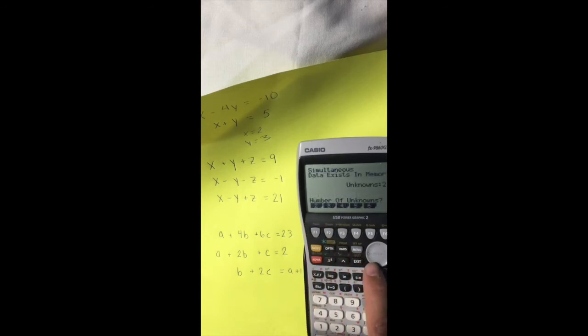However, this time, instead of hitting two unknowns, we actually have three unknowns. So we're going to hit that F2 for three unknowns, and again, we're just going to be typing in whatever the coefficient is.